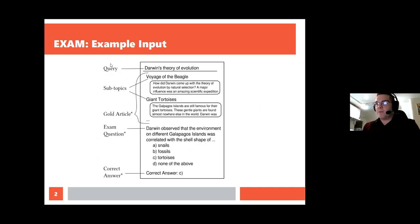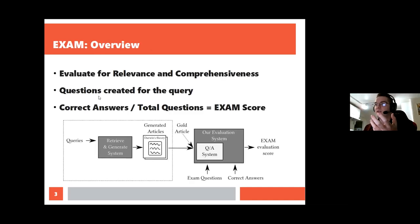So if there's some query like Darwin's theory of evolution, we're answering not only the query of what is it, but follow-up questions, perhaps around critics of Darwin or other theories at the time. To be able to do this, we decided to use handcrafted or selected questions to evaluate the articles using a QA system. An example you might see over here towards the bottom: an exam question might be something like, Darwin observed that the environment on different Galapagos Islands was correlated with the shell shape of snails, fossils, tortoises, or none of the above. We can use a question like this in concert with a QA system and look through an article as the input to be able to see, does it contain this information that we want? So if you take the number of questions that the QA system gets correct on that particular query, divide that by the total number of questions, you get a score. That's our EXAM score for that particular query. And that's the overall procedure here that you can see: we have our retrieve and generate systems, we get articles, put them through a QA system, evaluate them with questions, get scores.